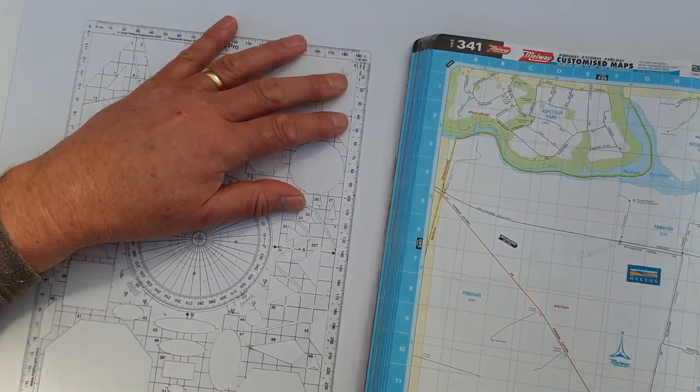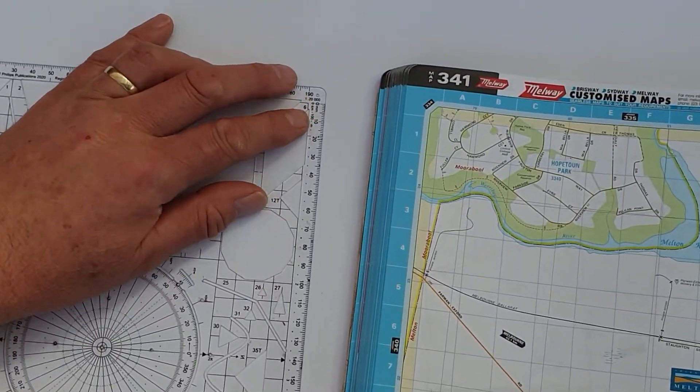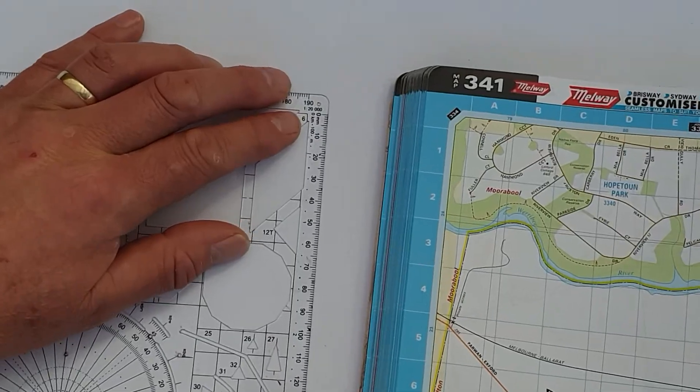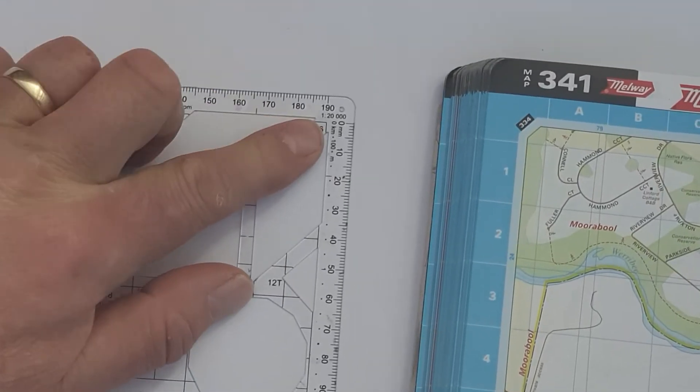On the right-hand edge of GeoPro, there's the millimeter ruler, but there's also a street directory scale, a 1 to 20,000.